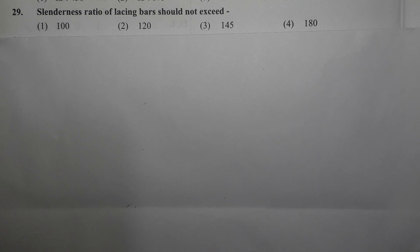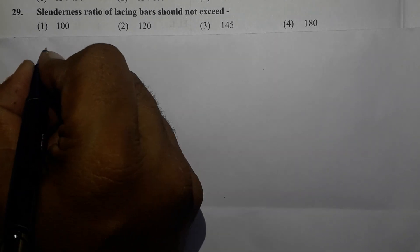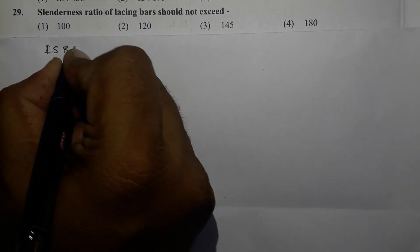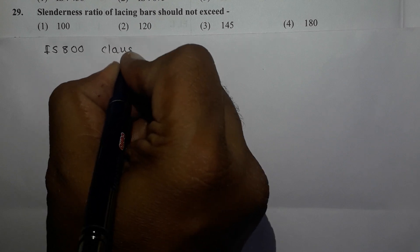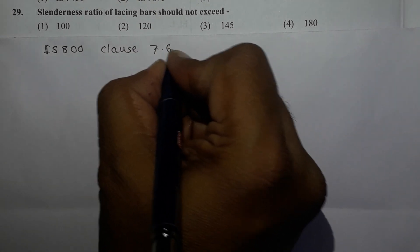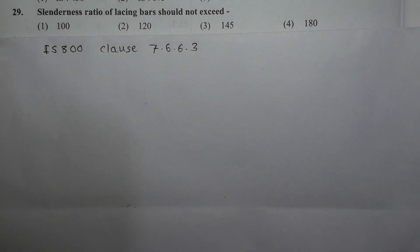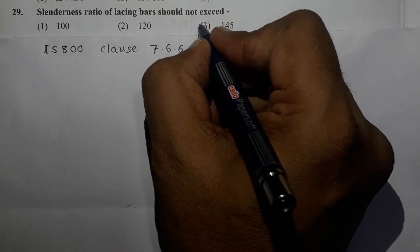The slenderness ratio of lacing bars shall not exceed — and four values are given. To get the correct answer, we refer to IS 800 clause 7.6.6.3, which states that the slenderness ratio of lacing bars shall not exceed 145. Therefore, the correct option is option number 3.